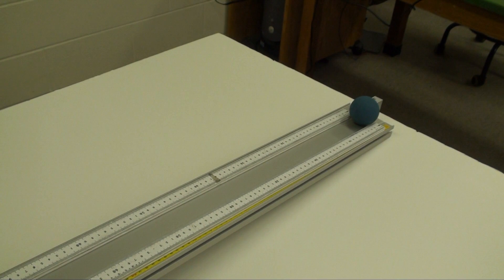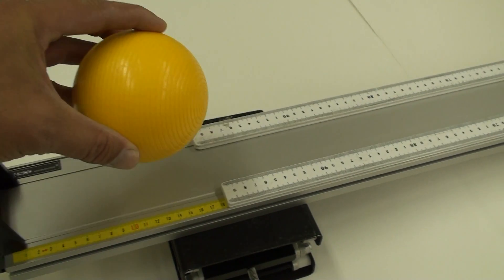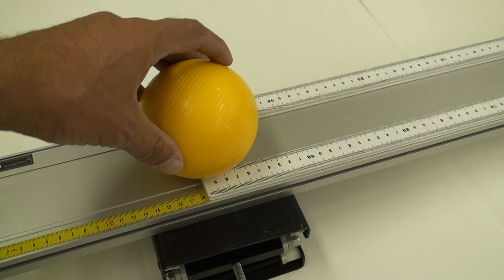Notice the use of the meter sticks to guide the ball down the middle of the track without providing too much friction. Then repeat with the solid ball, with f at two-fifths.